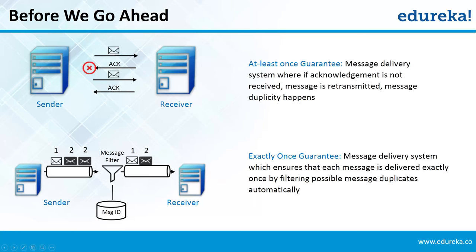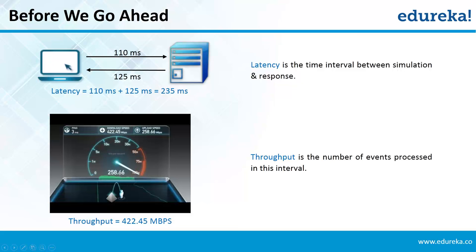The next key term is latency — the time interval between stimulation and response. From the diagram, it took 110 milliseconds to send a request to the server and 125 milliseconds for the server to respond back, so the latency here is 235 milliseconds. On the other hand, throughput is the number of events processed in a given interval. When you check your internet speed and get a result like 30 Mbps, that means 30 megabytes were processed in a second — that is the throughput.